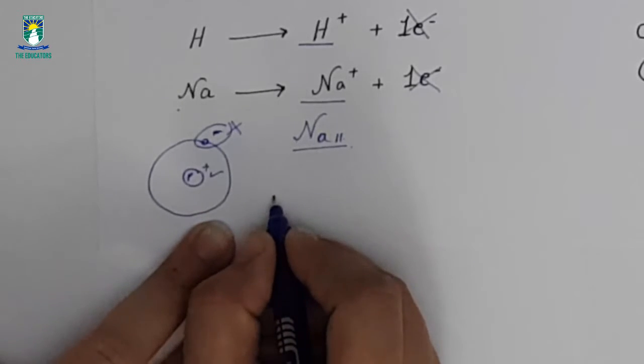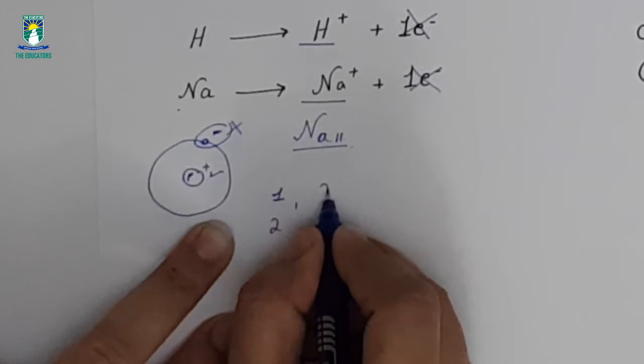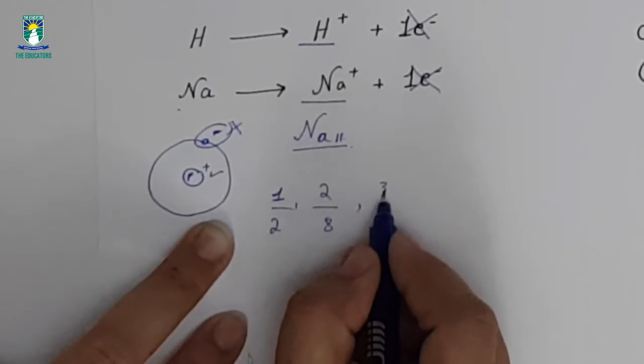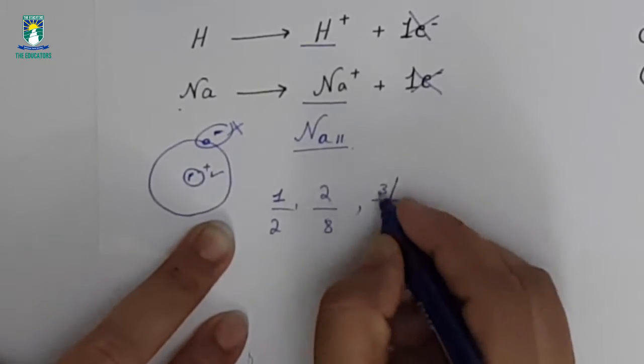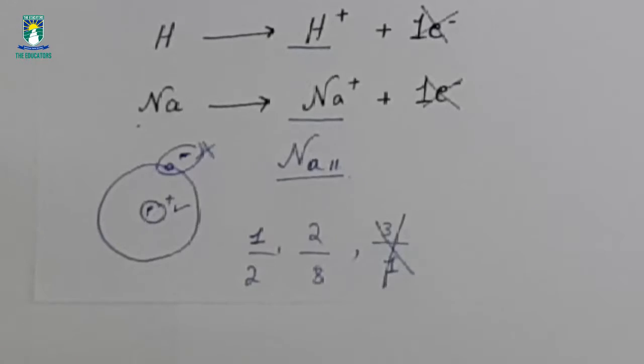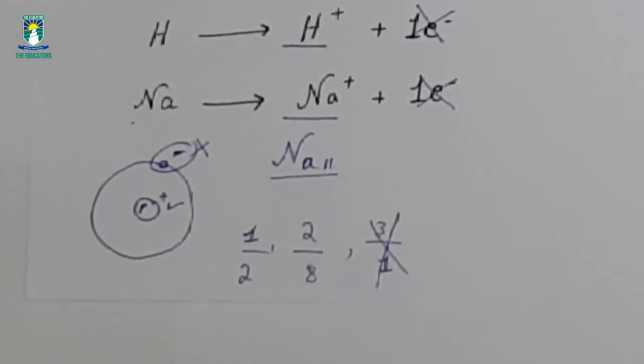First shell has two electrons, second shell has 8 electrons, third shell has 1 electron. When you remove the last shell electron, it will follow octet rule and be stable. This is why sodium has the ability to lose electron easily.